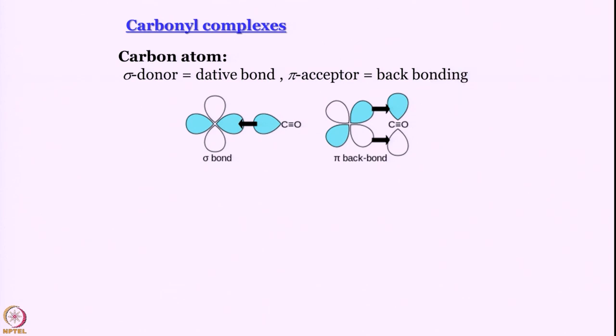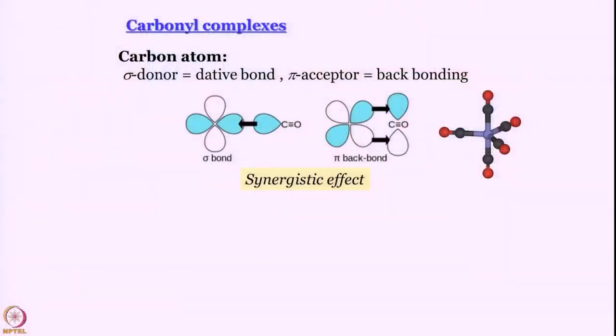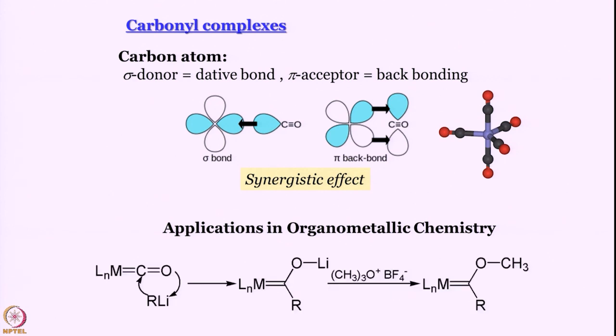The second part of our discussion of heteronuclear diatomic molecules is on carbon monoxide. Carbon monoxide is a very good ligand for metal ions and can form carbonyl complexes. It has been established that the carbon atom can act as a sigma donor — it forms a dative bond — and it can also act as a pi acceptor. That is called back bonding, which gives rise to a synergistic effect. The question is: why is it the carbon atom, and not the oxygen atom, that likes to donate electrons in a sigma fashion, and why can it sustain back bonding?